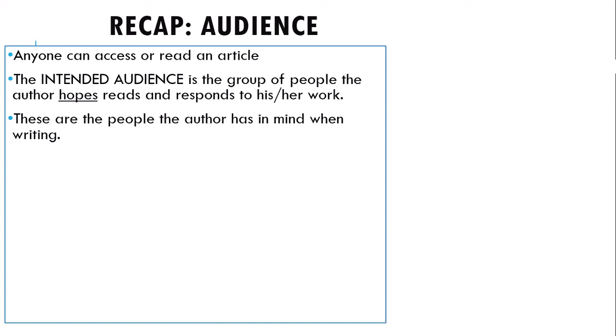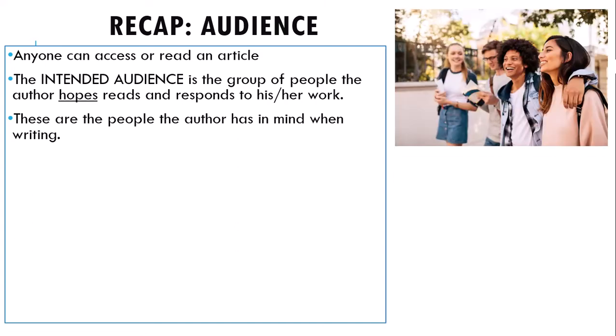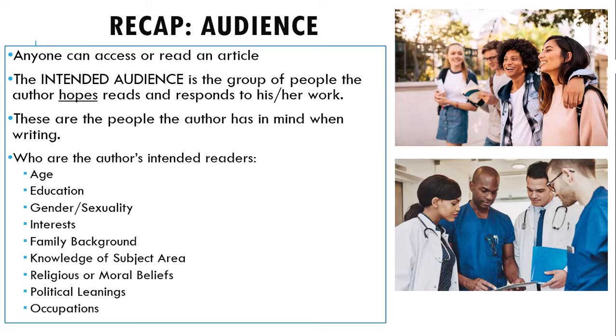For an online article, who specifically will click the title to read more? Who subscribes to a certain journal or newspaper? Some things the author might keep in mind are demographics like age, education, gender, or sexuality. There are also things like family background, knowledge of subject area, political leanings, religious beliefs, and occupations. For example, if I'm writing about how to treat flu symptoms, I'm going to write to younger people without medical expertise very differently than I would write to medical professionals.